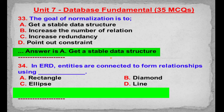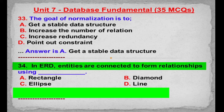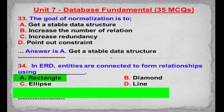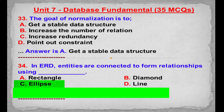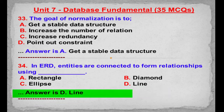MCQ number 34: In ERD, entities are connected to form relationships using. Option A: Rectangle. Option B: Diamond. Option C: Ellipse. Option D: Line. Correct answer is Option D: Line.